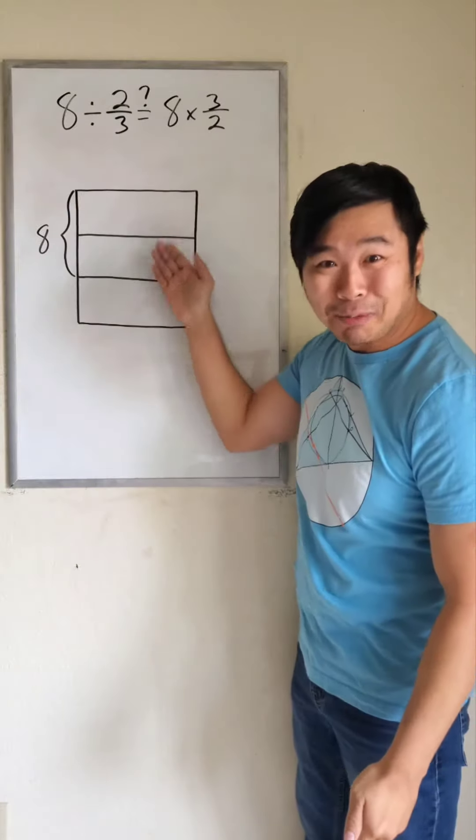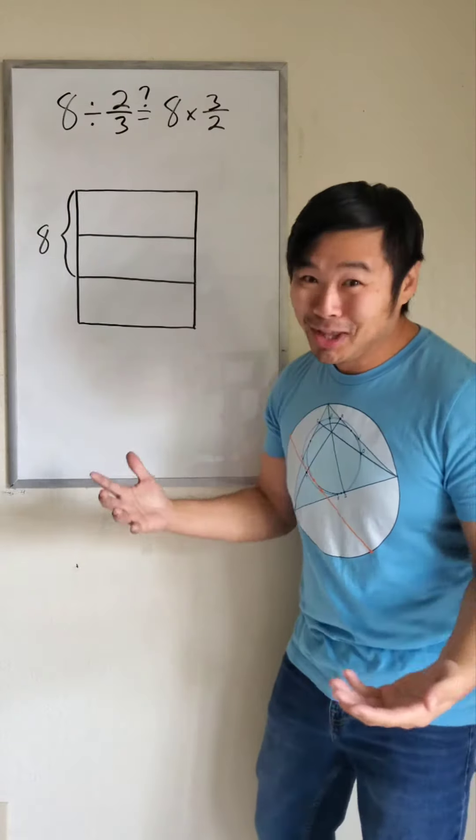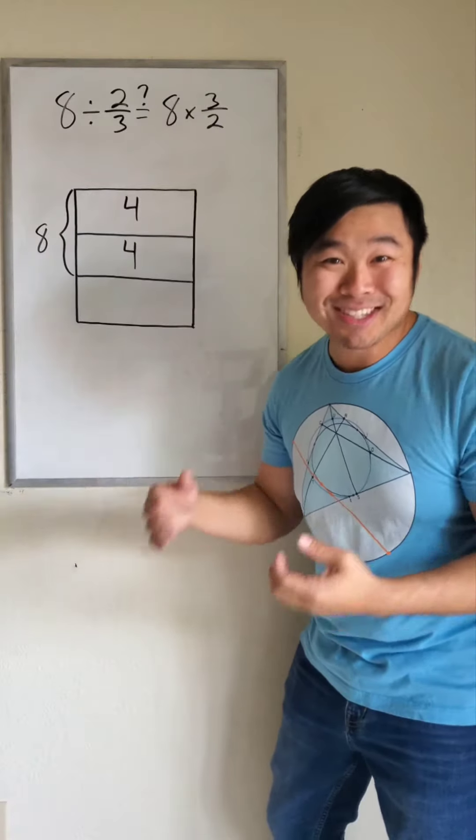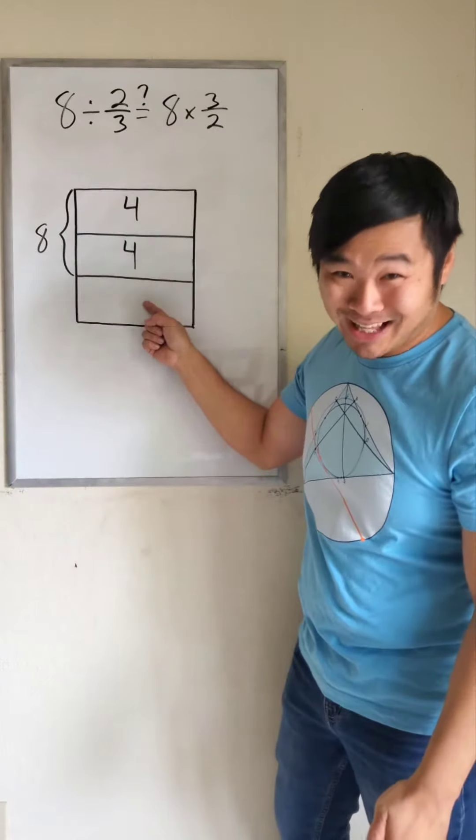So if two equal sized boxes make 8, what belongs in each box? 4! And since all of these boxes are the same size, this box is worth 4 as well.